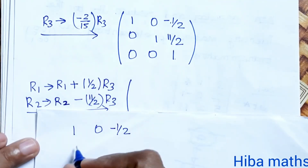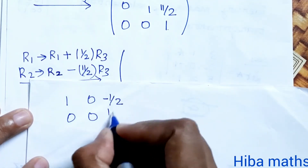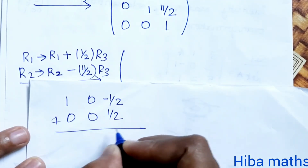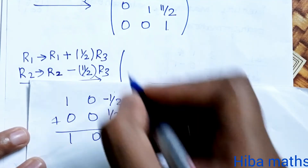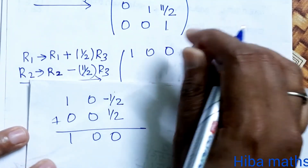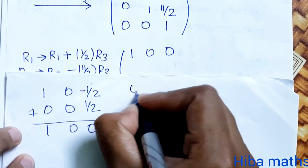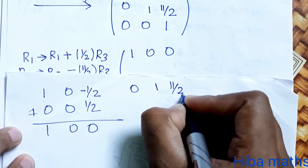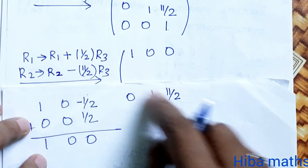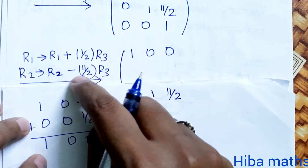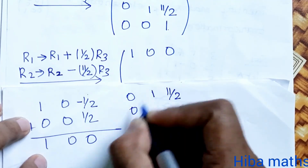After applying R2 minus 11/2 times R3 and R1 plus 1/2 times R3, all off-diagonal entries in the third column become 0. The matrix is now approaching the identity matrix [1 0 0 / 0 1 0 / 0 0 1].